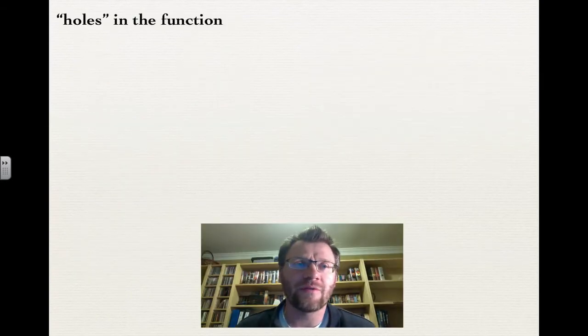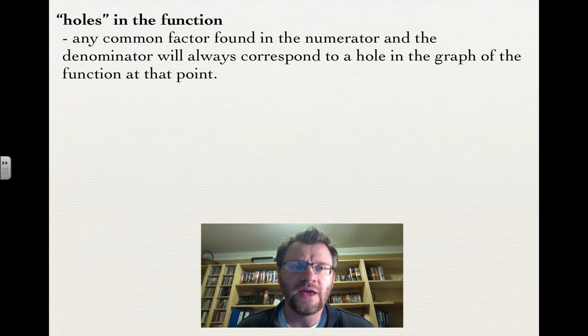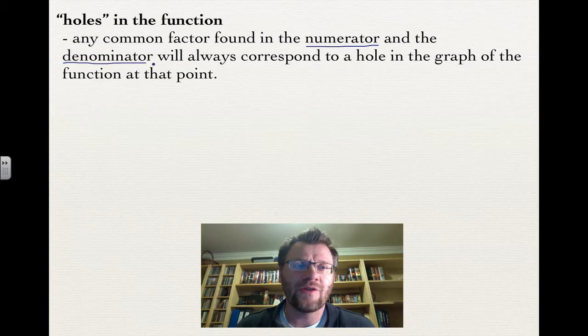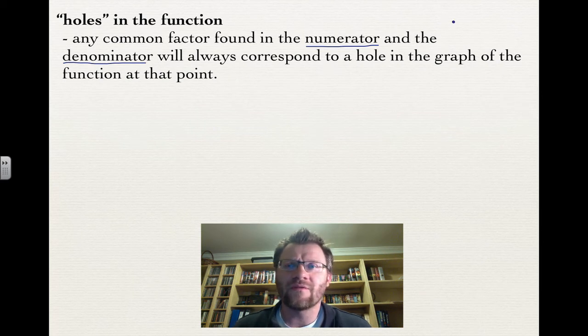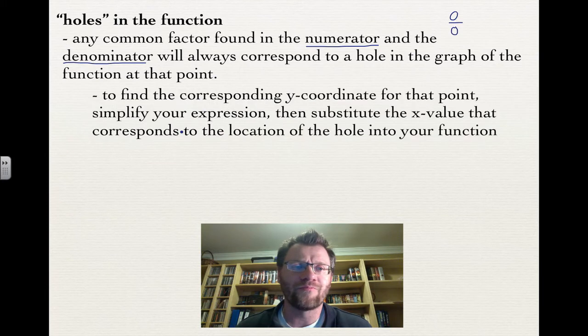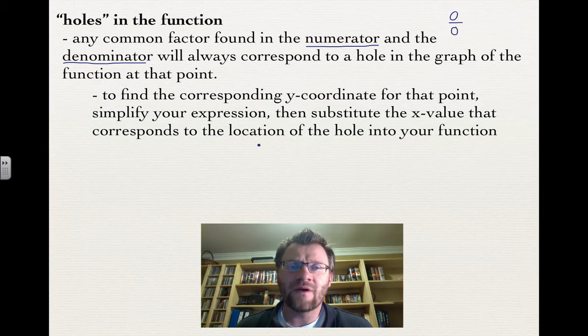The first thing we're going to find is a hole inside the function. Any factor that's found in the numerator and the denominator, so if it's a common factor in both, will always correspond to a hole in the graph at that point. Those are the indeterminate values we were talking about, dividing 0 by 0. To find the corresponding y-coordinate, you simplify your expression, then substitute the x-value into your function.